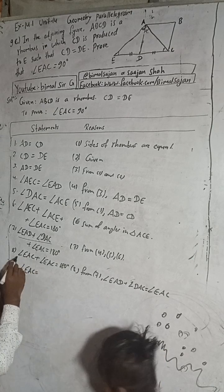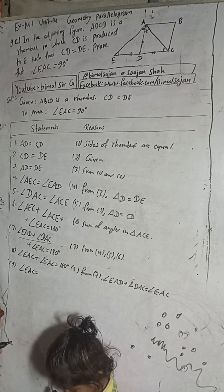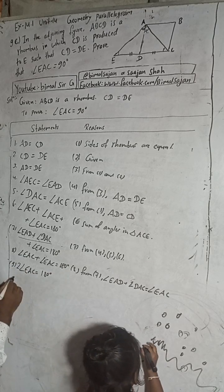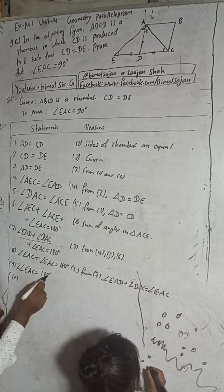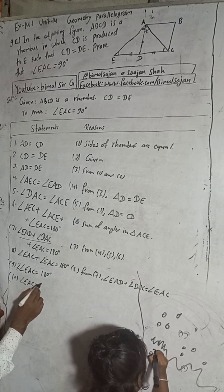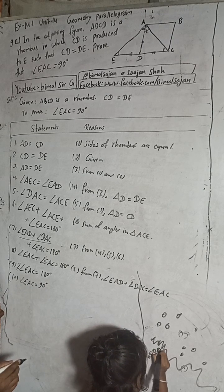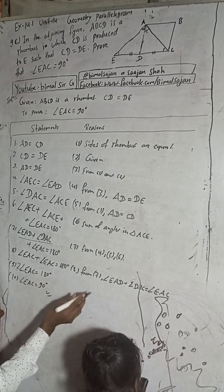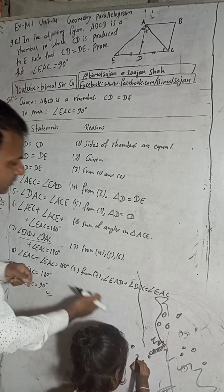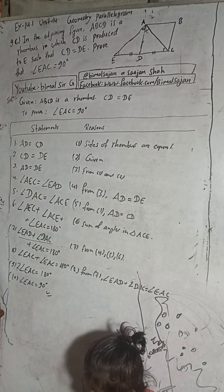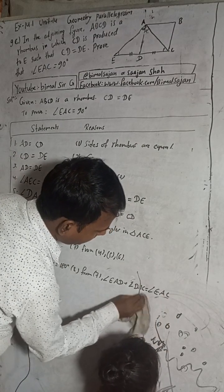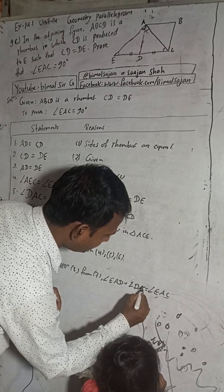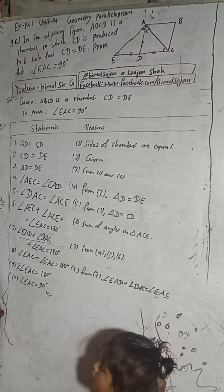Dividing both sides by 2: angle EAC is equal to 90 degrees. So angle EAC equals 90 degrees, which is what we needed to prove. The reason is just solving the equation. This is the solution.